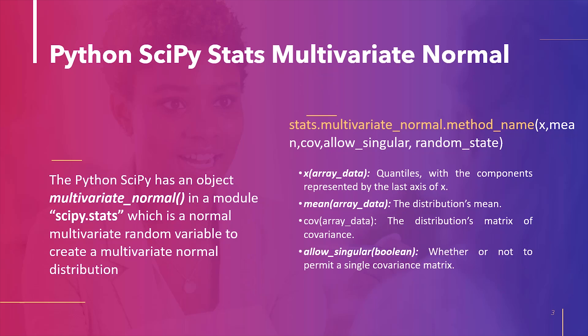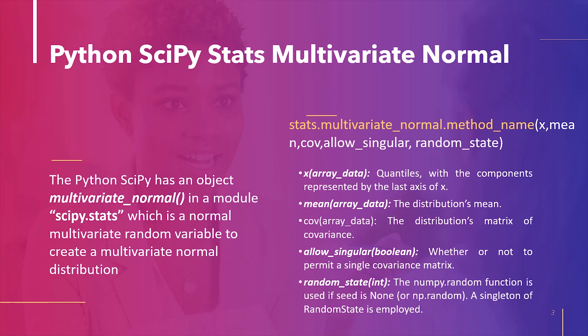allow_singular: whether to allow a singular covariance matrix — by default it is False. random_state: if seed is None or np.random, the numpy.random.RandomState singleton is used. If seed is an int, a new RandomState instance is used seeded with that seed. If seed is already a generator or RandomState instance, that instance is used.